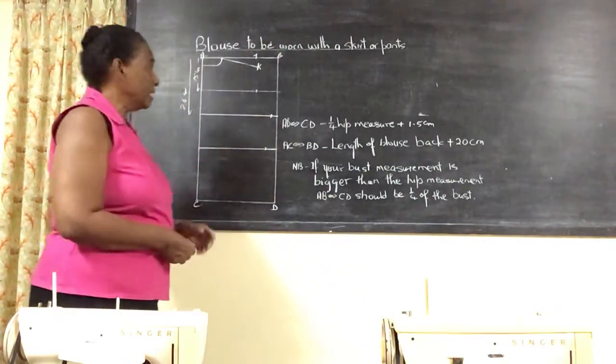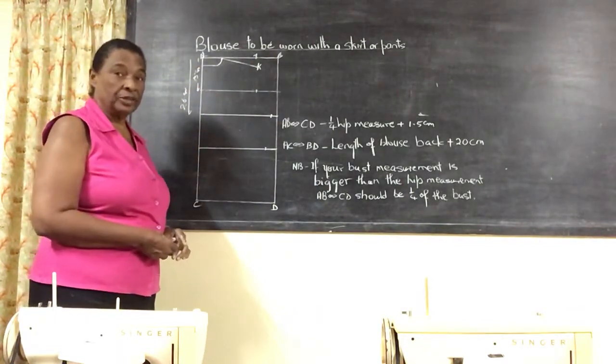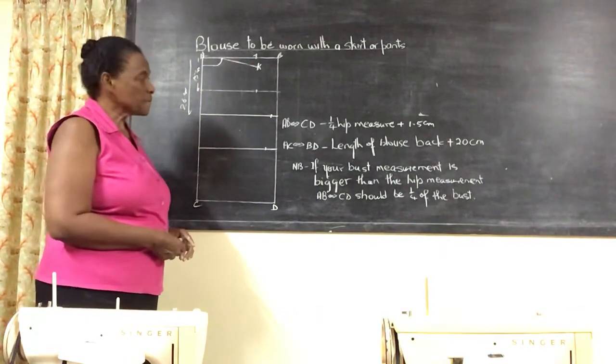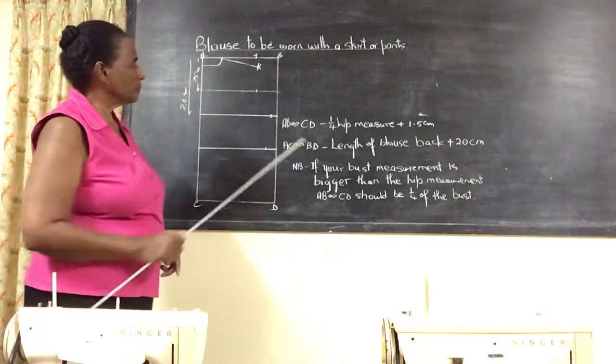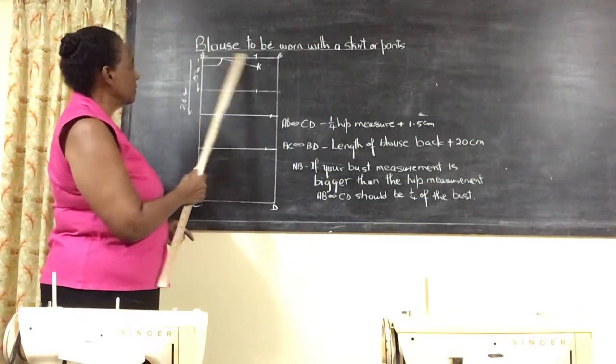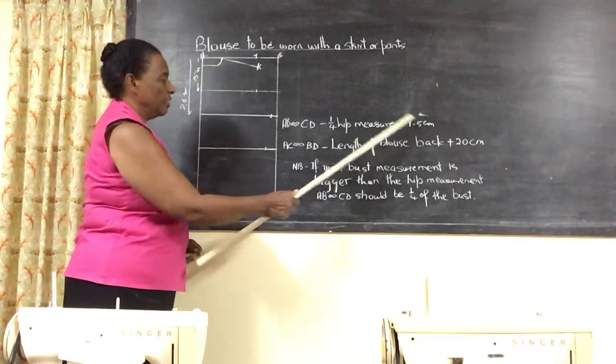On the board, I have drawn the rectangle outlining the blouse back. To get your AB and CD lines, you are going to use a quarter of the hip measurement plus 1.5.